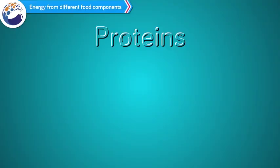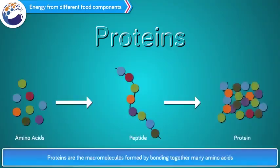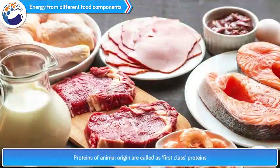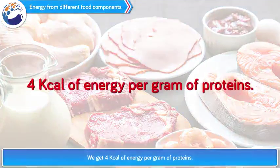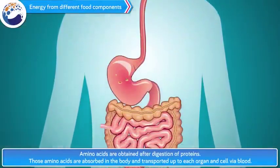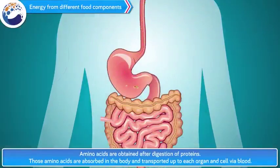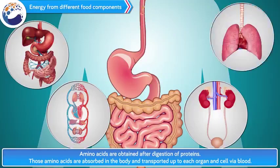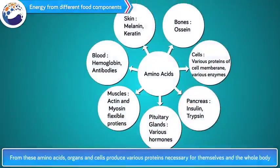Proteins are macromolecules formed by bonding together many amino acids. Proteins of animal origin are called first-class proteins — for example, fish, meat, and milk products. We get 4 kilocalories of energy per gram of protein. Amino acids are obtained after digestion of proteins. Those amino acids are absorbed and transported to each organ and cell via blood, where organs and cells produce various proteins necessary for themselves and the whole body.